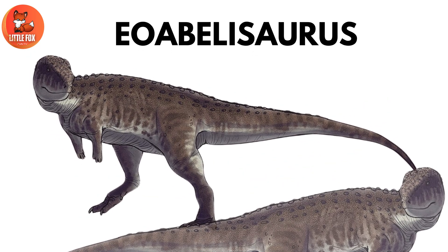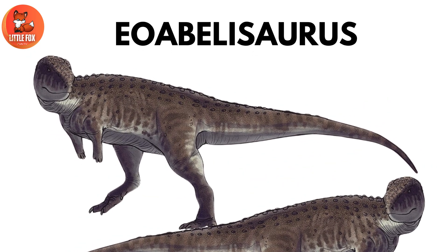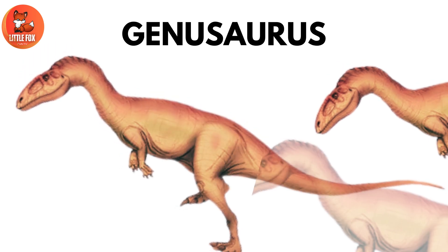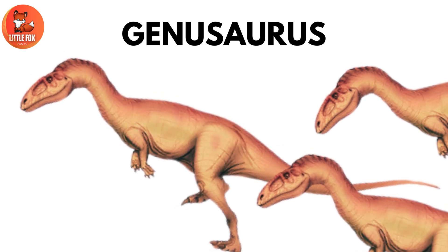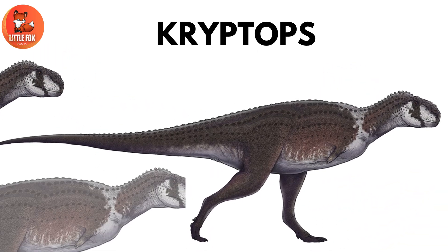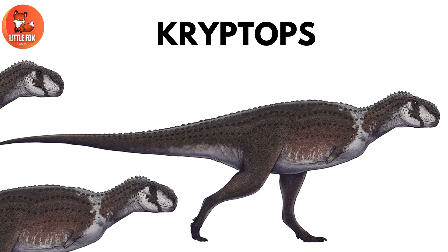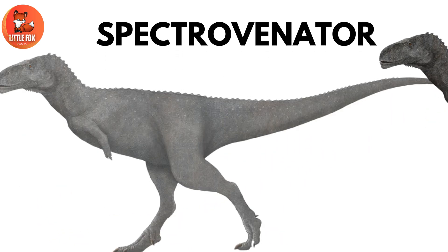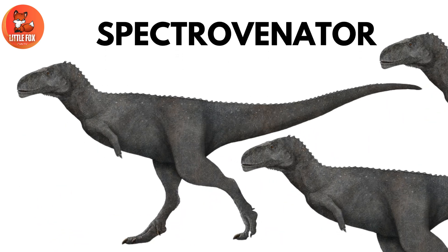Number 4: Eobelosaurus. Number 5: Genusaurus. Number 6: Cryptops. Number 7: Spectrovenator.